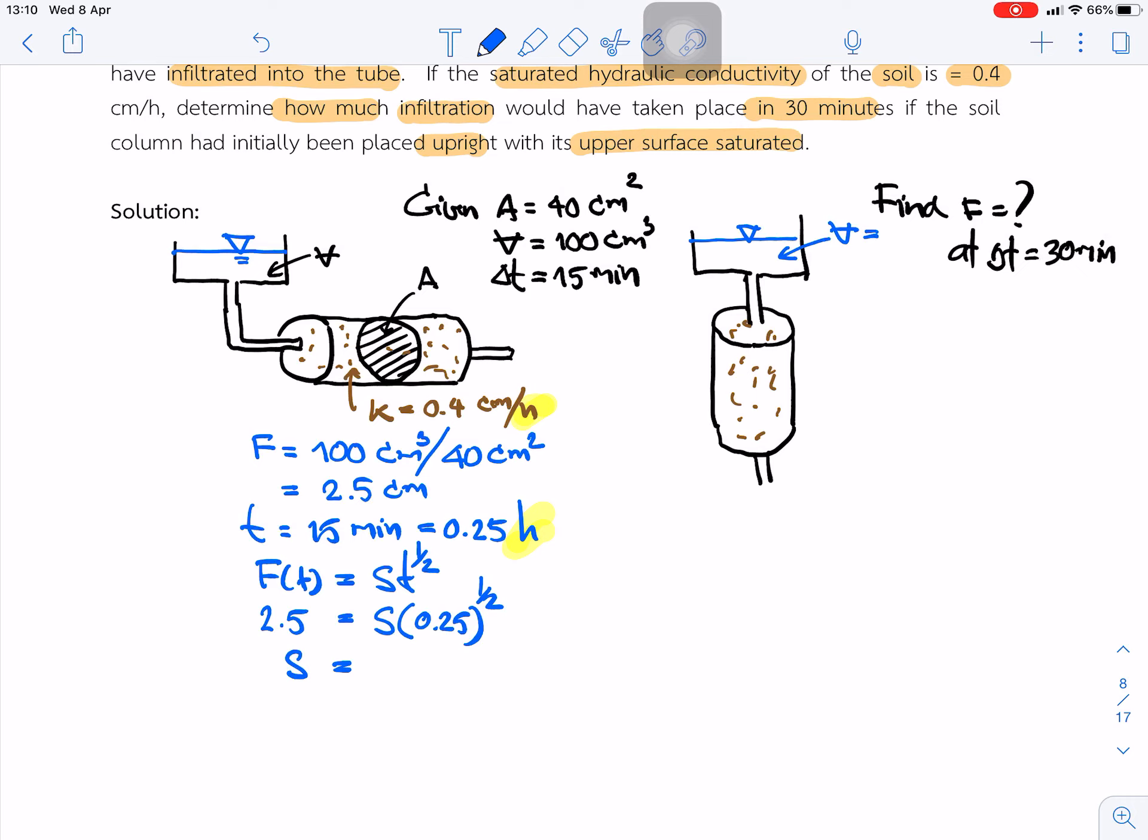So we can calculate sorptivity is about 5 centimeters per hour to the power minus 0.5. And in this case we can estimate.